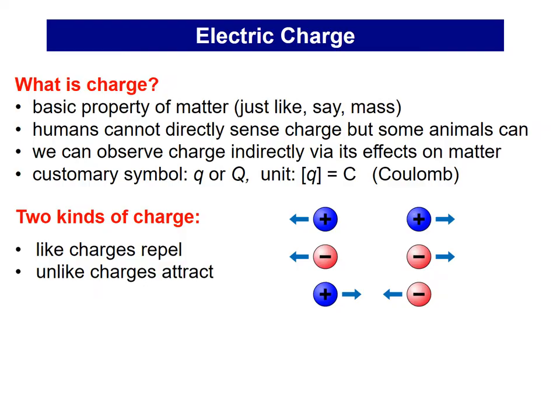Electric Charge is basically a property of matter, like mass. Humans cannot directly sense charge, whereas some animals like cats can sense it. We observe charge through its effects on objects. We denote charge with small q or capital Q, and its unit is C, meaning Coulomb. There are two types of charge: positive, negative, or neutral — positive is proton and negative is electron.